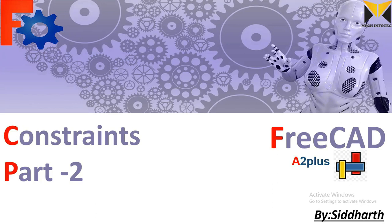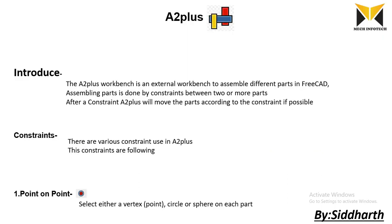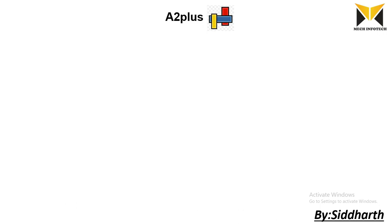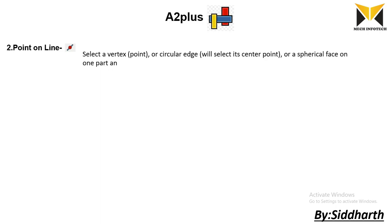Hello everyone, I am Siddharth. This is Constraint part 2 in FreeCAD A2+. In the previous tutorial we learned what A2 plus is, and what constraints are, including the point on point constraint. Today we learn point on line constraint. In this constraint we can select a vertex, circular edge, or spherical face on one part and an edge on the other part.